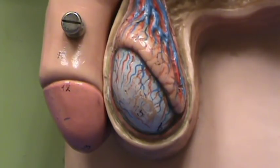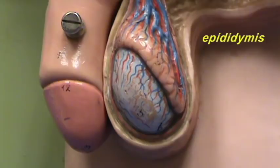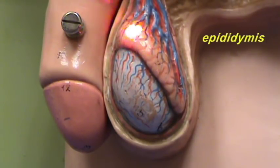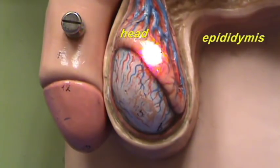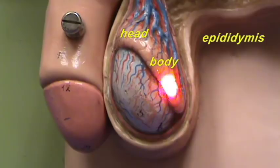On the posterior side of the testes there is a very highly convoluted tubular structure, the epididymis. The epididymis can be divided into parts. The part on the superior pole of the testes is the head. Most of the epididymis is referred to as the body, and finally the distal part is called the tail.